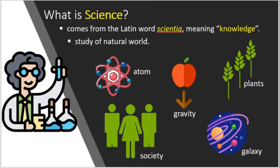Let's now define what is science. The word science comes from the Latin word scientia, meaning knowledge. So we are talking here about the body of knowledge. The examples of this knowledge are atoms, gravity, plants, galaxy, the characteristic or the behavior of the society.